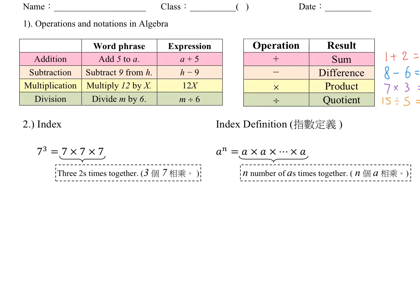Next, we are going to talk about index. If we have 3 sevens times together, we can call it 7 to the power 3, or we can call it 7 cubed. Okay? With the same idea, if we have n numbers of 8 times together, 8 times 8, so many 8s times together, we have n numbers of 8. Then we call it 8 to the power n. This is index definition.